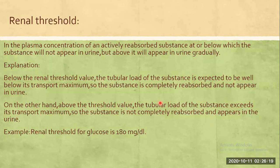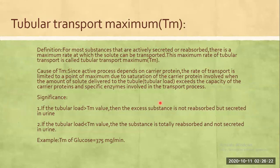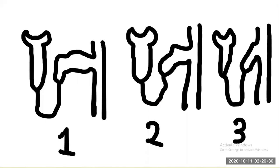When reabsorption starts to reach its limit, we call that level the renal threshold. Beyond that point, we call it tubular transport maximum. For glucose, the renal threshold is approximately 180 mg per deciliter.